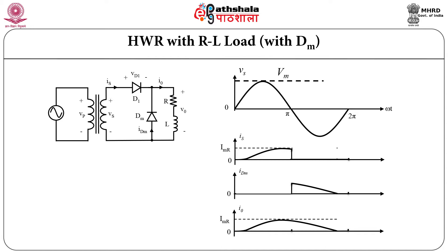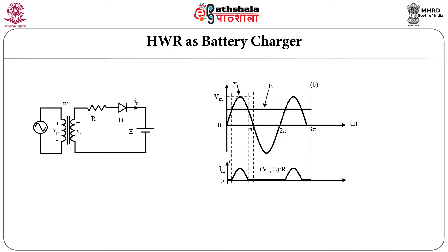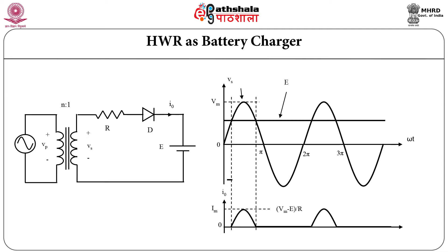Half wave rectifiers can also be used as a battery charger. This is the diagram of a battery charging circuit. Resistor R is used for current limiting. During positive half cycle, the diode will be turned on when input voltage is greater than the battery voltage E. During negative half cycle, the battery will not be charged because the diode will be reverse biased.